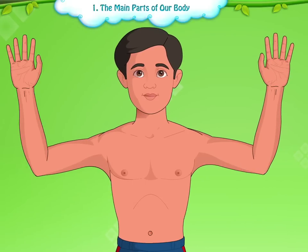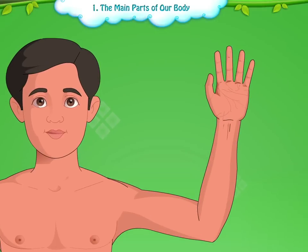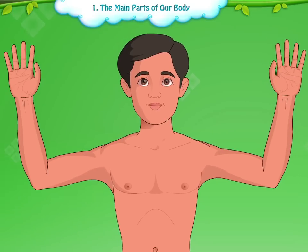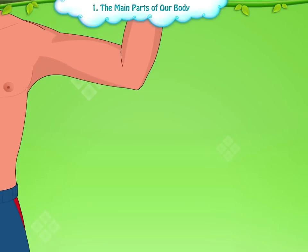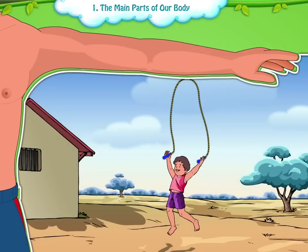Each arm has an elbow, a wrist and a hand. We have two hands. Our hands have palms, thumb and fingers. One hand has five fingers, so we have ten fingers altogether.